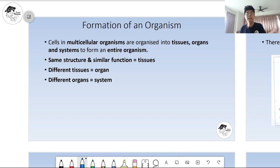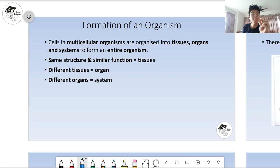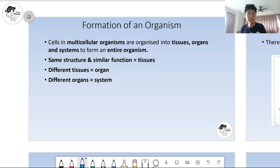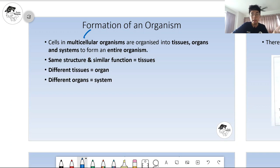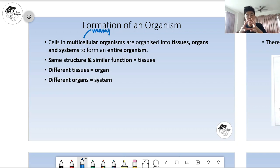Before this we already learned about the cell — the basic unit of our body. Since we know our body is made out of many very tiny cells, we need to know how these cells become bigger and bigger until they form one organism like us. So let's start — cells in multi-cellular organisms. We have two types of organisms: multi-cellular and uni-cellular. Uni-cellular means only one cell by itself, while multi-cellular means many cells combined together to make one organism.